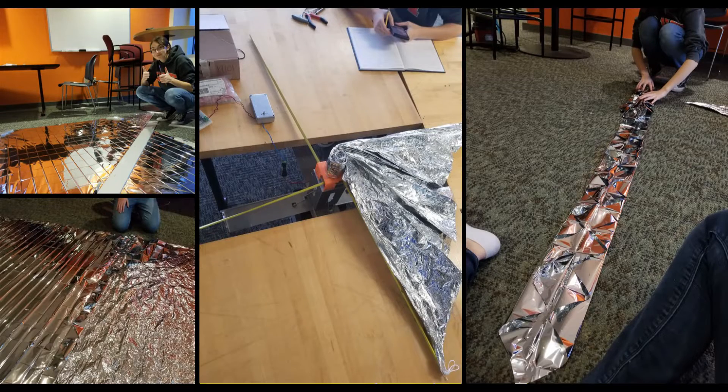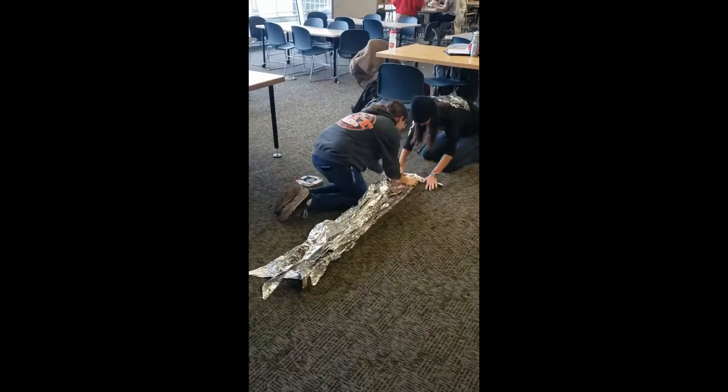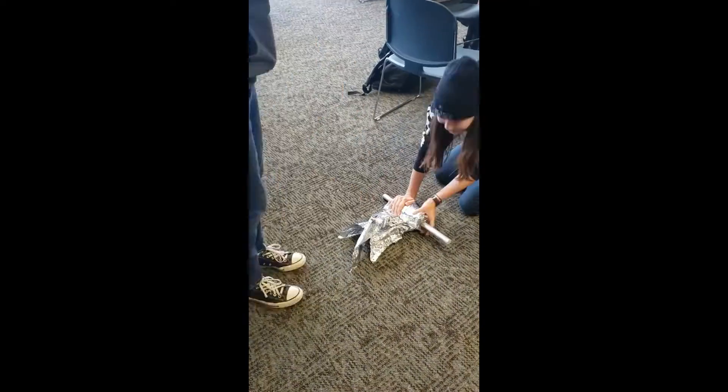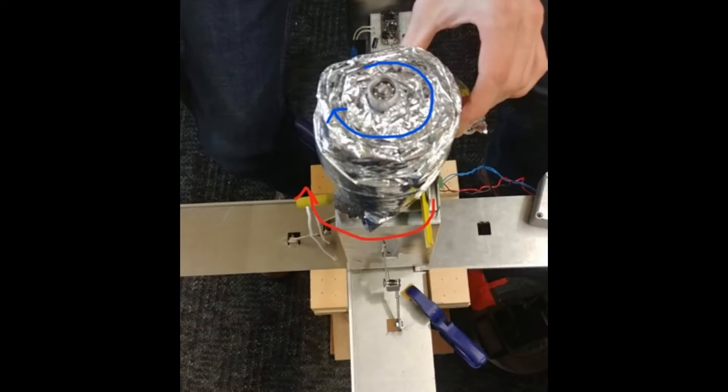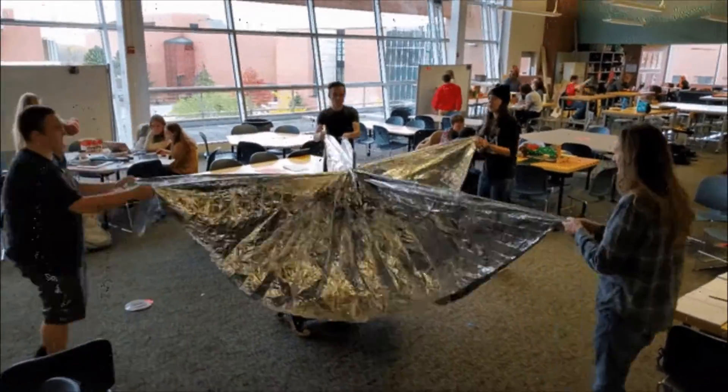Each triangle is accordion-folded into 10 cm wide strips and then stacked on top of each other and rolled onto a spindle. The corners of the sails are then attached to four booms that form a cross shape and are pulled out from the CubeSat when the booms are extended.